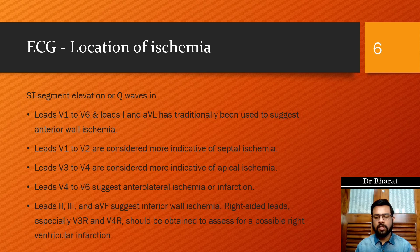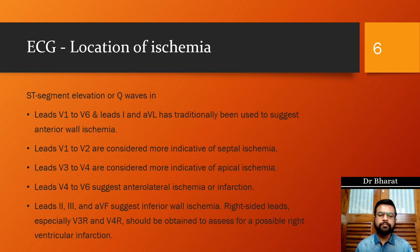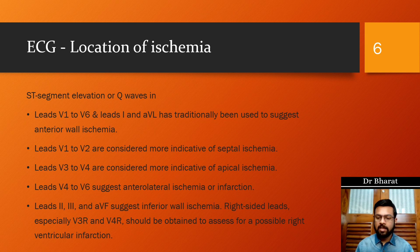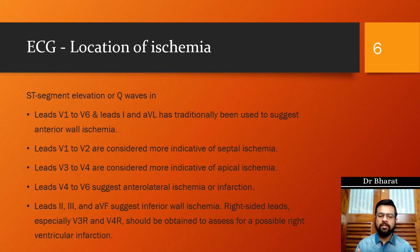According to the leads affected in the ECG, we can determine the location of ischemia. ST segment elevation or Q waves in V1 to V6 and Lead I/aVL suggest anterior wall and lateral MI. V1 and V2 represent the septal area; V3 and V4 are more indicative of the apical region; V4 to V6 indicate anterolateral infarction. Leads II, III, and aVF suggest inferior wall MI. Right-sided leads — switching V3, V4, V5, V6 to the right side — with ST segment changes in right-sided V4 denote right ventricular involvement.